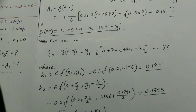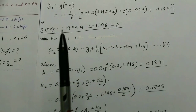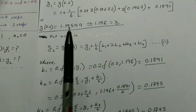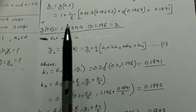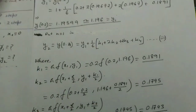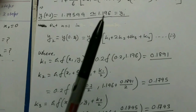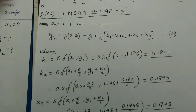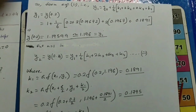With all four k values calculated, we substitute into the equation: y₁ = y₀ + (1/6)(k₁ + 2k₂ + 2k₃ + k₄). After calculation we get y₁ = y(0.2) ≈ 1.19599, approximately 1.196. Note: if the question specifies a number of decimal places, round accordingly; otherwise report as many as appropriate. This completes Step 1.